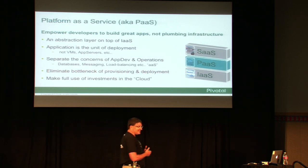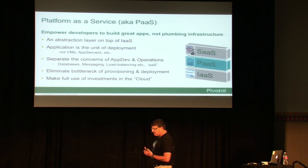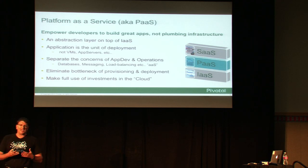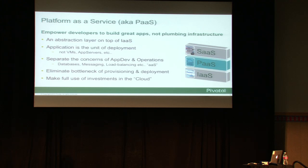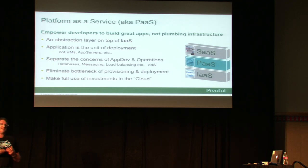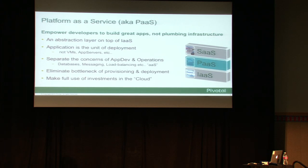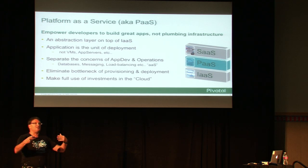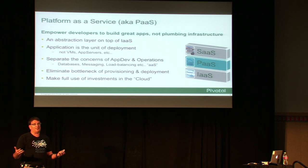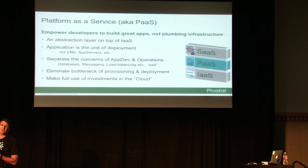The idea of this slide is not to define what PaaS or IaaS are, but to convey the mission of platform as a service: making developers more productive and empowering them to build great apps rather than plumbing middleware and infrastructure. PaaS is an abstraction layer that sits on top of infrastructure as a service. The unit of deployment is the application — you deploy an app, and you don't see VMs, databases, app servers, or web servers. That middleware layer is abstracted from you as a developer, separating the concerns of developing versus deploying an app.